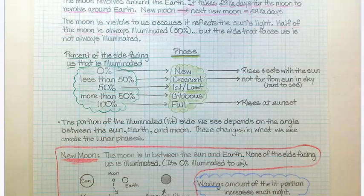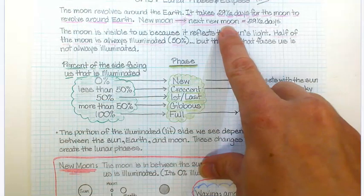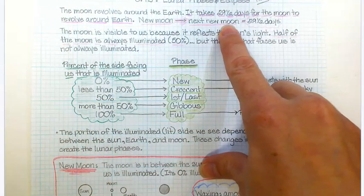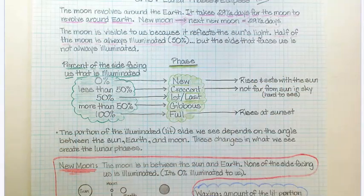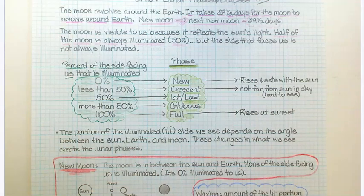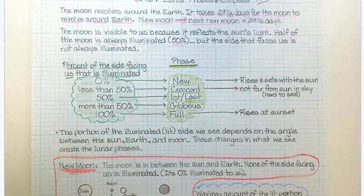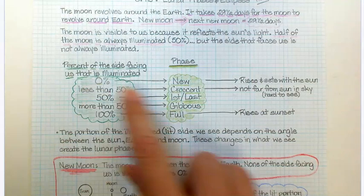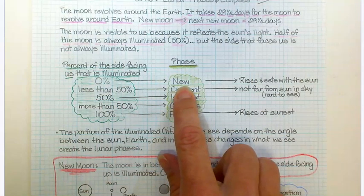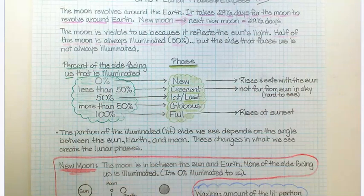A couple of hints about lunar phases. First of all, the entire lunar cycle is about 29 and a half days for about a month. Even though 50% of the moon is always illuminated, the side that faces the sun, how much of that we see depends on the angle between the sun, earth, and moon. If what we're seeing is 0% illuminated, then that's a new moon and it's in the same area of the sky and it's going to rise and set with the sun.